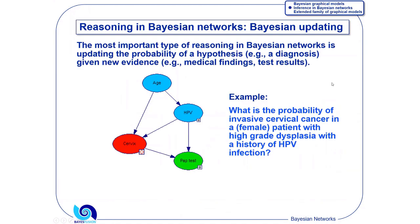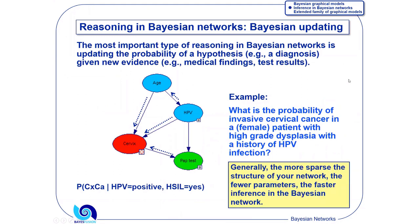Inference, Bayesian updating, Bayesian inference, application of Bayes' theorem. You can answer questions like, what is the probability of an invasive cervical cancer in a female patient with high-grade dysplasia with a history of HPV infection? You can imagine that as observing some variables and then spreading information across the network through a repetitive application of Bayes' theorem. The more sparse the network is, the faster the inference is.